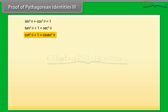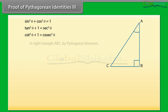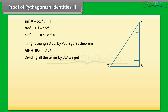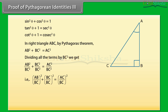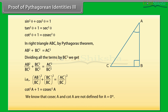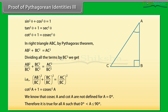Proof of Pythagorean Identity 3: The last identity is cot square theta plus 1 is equal to cosec square theta. To prove this, we will again take a right triangle ABC. By Pythagoras theorem, AB square plus BC square is equal to AC square. Dividing all the terms by BC square, we can write it as: AB upon BC whole square plus BC upon BC whole square is equal to AC upon BC whole square. That is, cot square A plus 1 is equal to cosec square A. We know that cosec A and cot A are not defined for A equal to 0 degree. Therefore, it is true for all A such that 0 degree is smaller than A which is smaller than or equal to 90 degree.